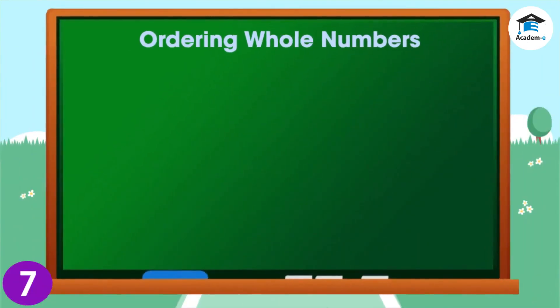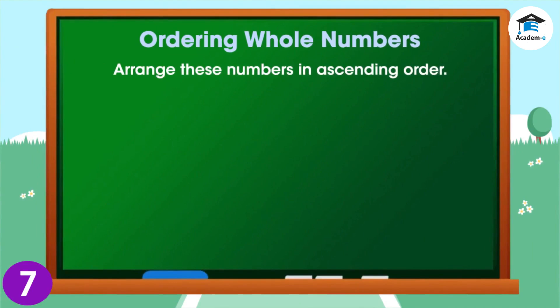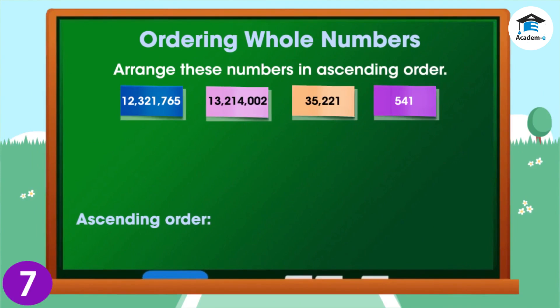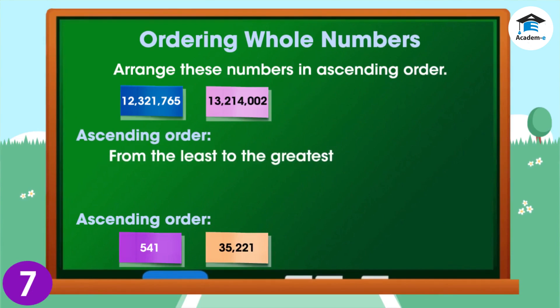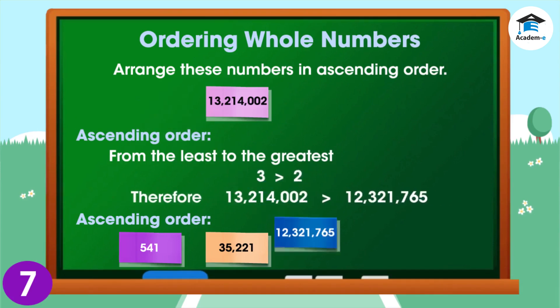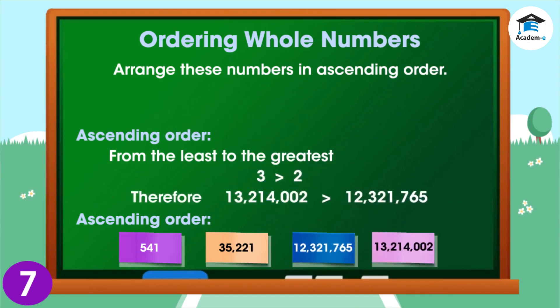Ordering whole numbers. The first digits are the same, and so we compare the second digits. These are the numbers in ascending order: 541; 35,221; 12,321,765; 13,214,002.